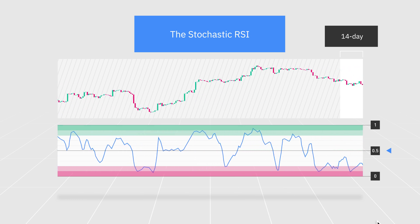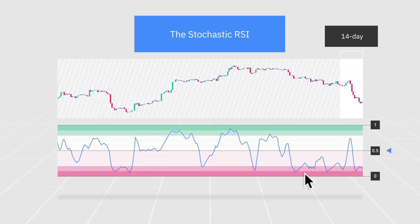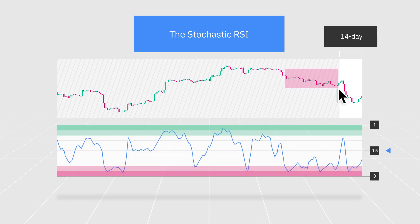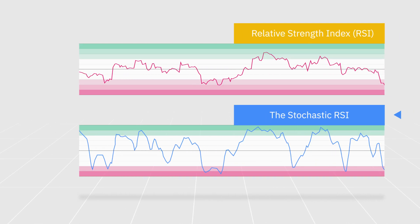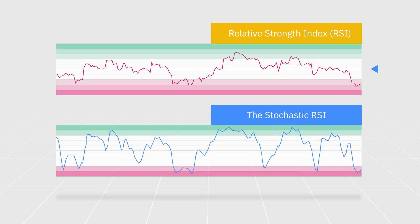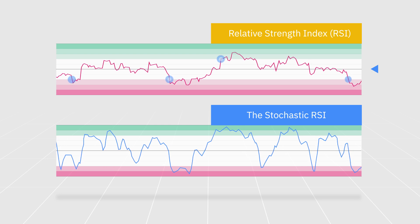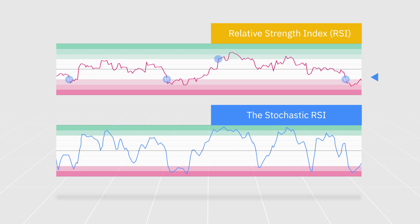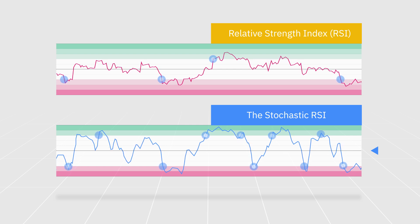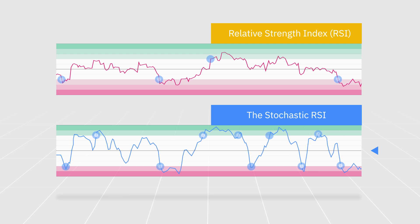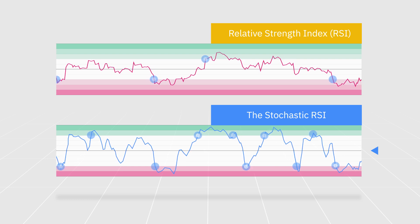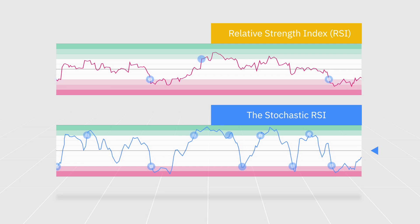Likewise, readings consistently below 0.5 and trending towards 0.2 may indicate a downward market trend. Although the RSI and the Stochastic RSI have a lot in common, the standard RSI moves relatively slower, producing a smaller number of trading signals. This means that the Stochastic RSI is a faster and more sensitive version of the RSI. While this gives traders more opportunities to identify potential reversals in the market, it's also riskier because it produces more false or misleading signals.